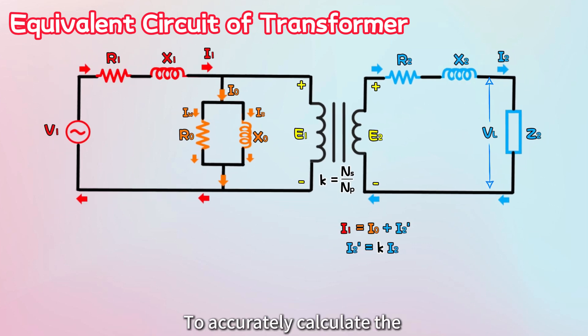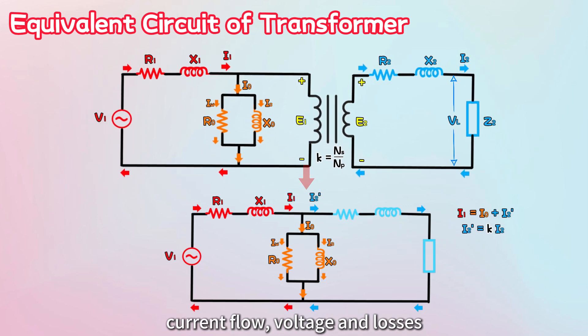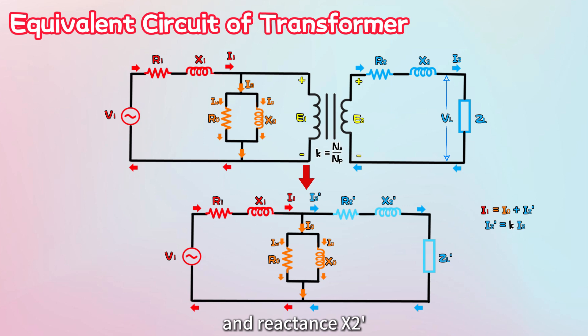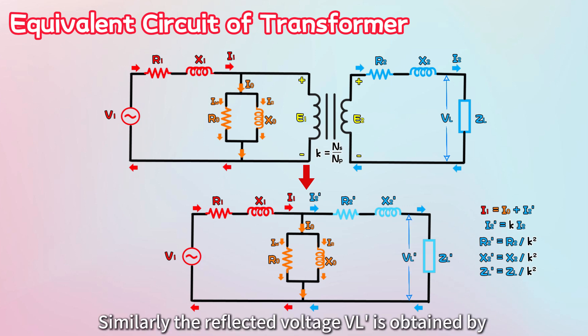To accurately calculate the current flow, voltage, and losses, the components from the secondary circuit can be reflected to the primary circuit. For example, the reflected resistance R2' and reactance X2', and reflected load impedance ZL', are calculated by dividing R2, X2, and ZL by K squared. Similarly, the reflected voltage VL' is obtained by dividing load voltage VL by K.